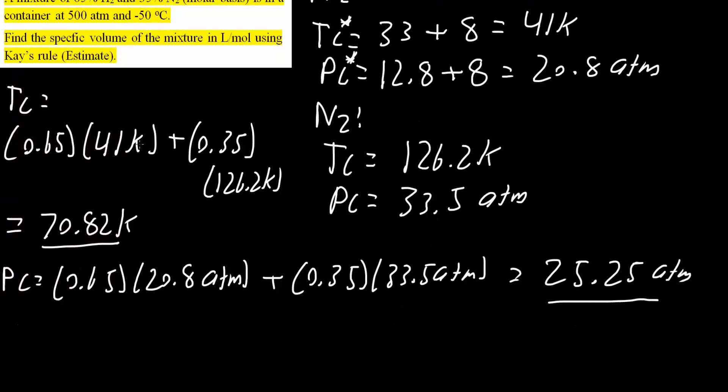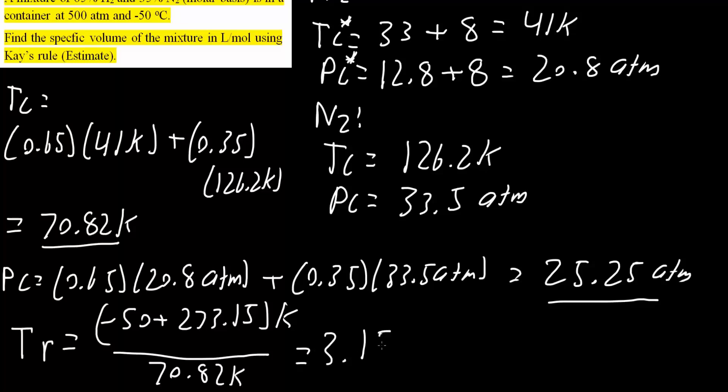From here, we will calculate TR and PR. The formula for TR is the temperature in the container. In our case, we have negative 50 Celsius, but we want it in Kelvin. So, negative 50 plus 273.15 would give us Kelvin. Now, we divide this by TC. TC, we said, was 70.82 Kelvin. So, the TR value is 3.151.